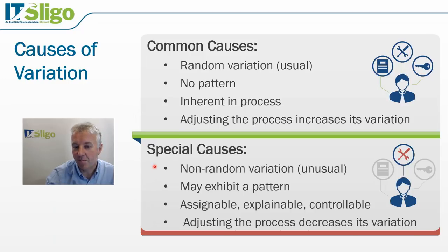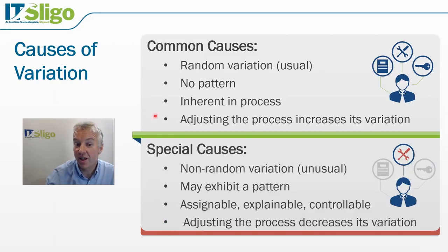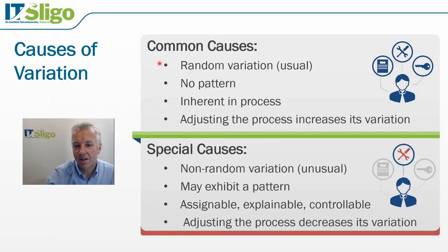For example, if you got a bad batch of coffee, that would be assignable, explainable, and controllable. If you improve your suppliers, you will decrease the variation of the coffee. Or maybe your machine is out of calibration. But if sometimes you get a good batch and sometimes a bad batch with no real pattern, that's called common cause variation.